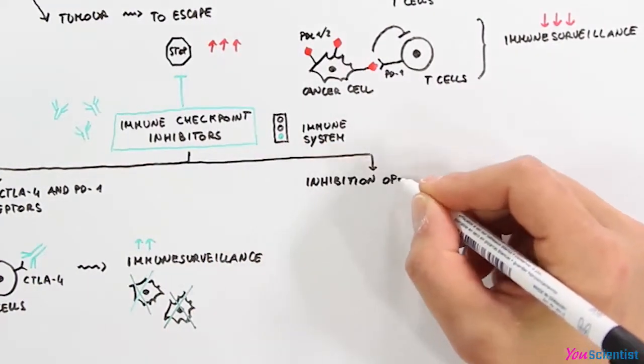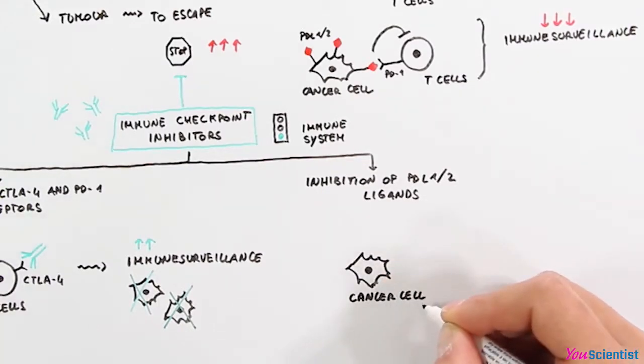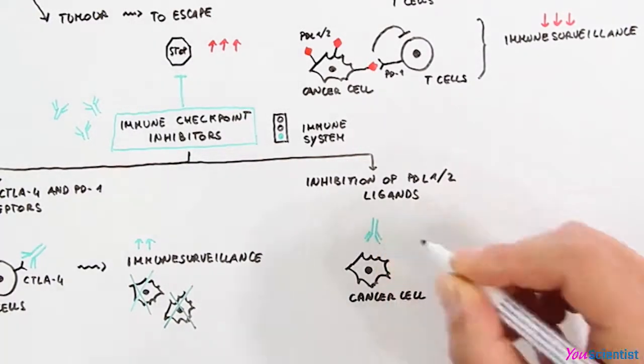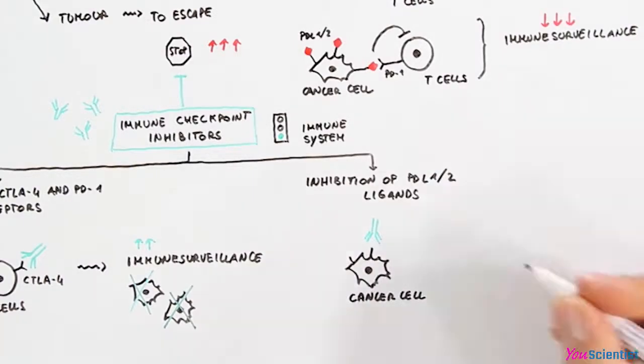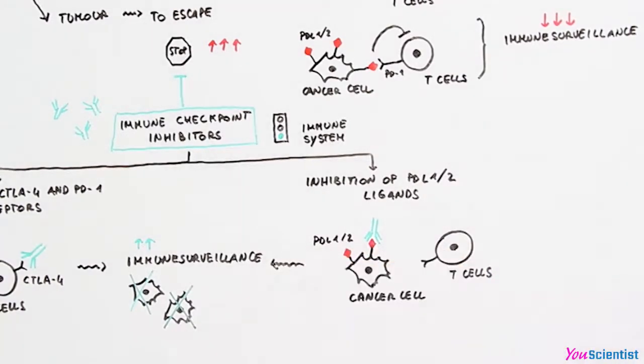Another strategy relies on the inhibition of PD-L1 and PD-L2 ligands on cancer cells. These monoclonal antibodies counteract the interaction between PD-L1/2 and the relative receptors on T cells. This approach restores immunosurveillance as well.